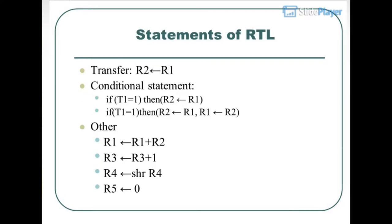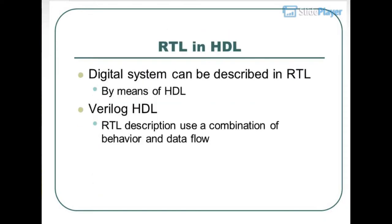RTL transfer statements: R2←R1. Conditional statement: If T1=1 then R2←R1. Another example: If T1=1 then R2←R1, R1←R2. Otherwise: R1←R1, R1←R1+R2, R3←R3+R1, R4←SHR4, R5←0, R5.